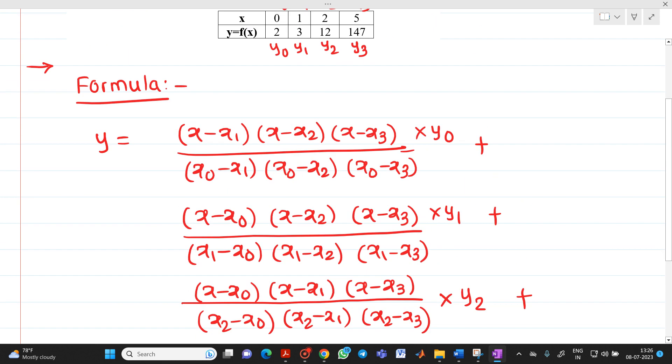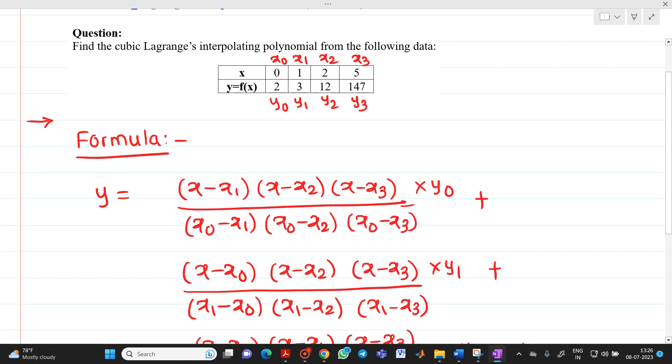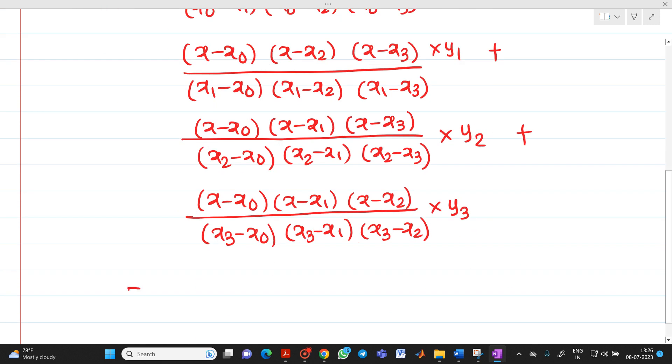Now, we have all these values x0, x1, x2, x3, and y0, y1, y2, y3. Here we do not know what is the value of x, so we will be writing it as x. So it will be x minus 1, x minus 2, x minus 5, into y0 is nothing but 2, divided by 0 minus 1, 0 minus 2, 0 minus 5, plus